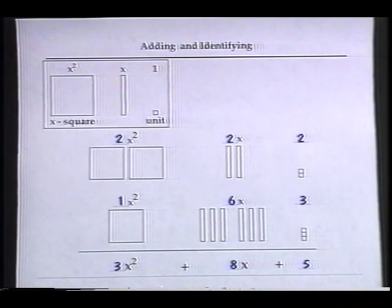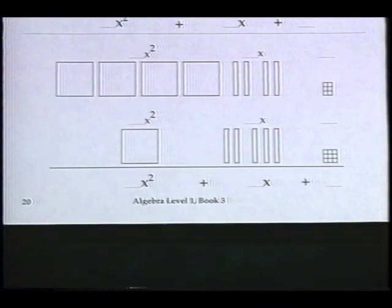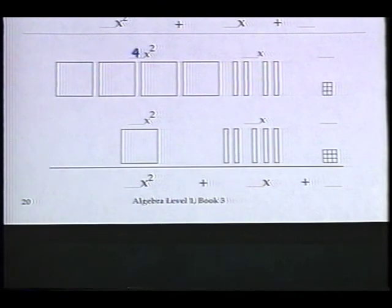The last problem is done the same way. There are four X-squares, four X's, and six units. And one X-square, five X's, and nine units. Together, there are five X-squares, plus nine X's, plus fifteen. You're doing great.